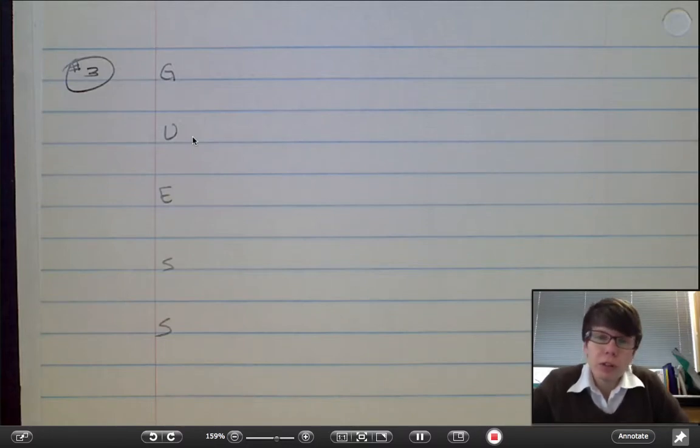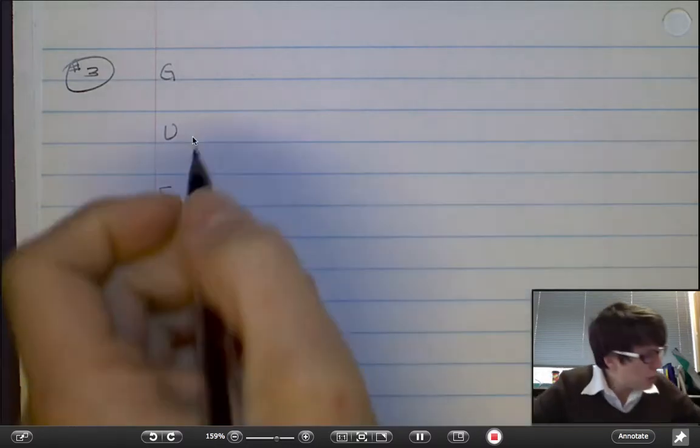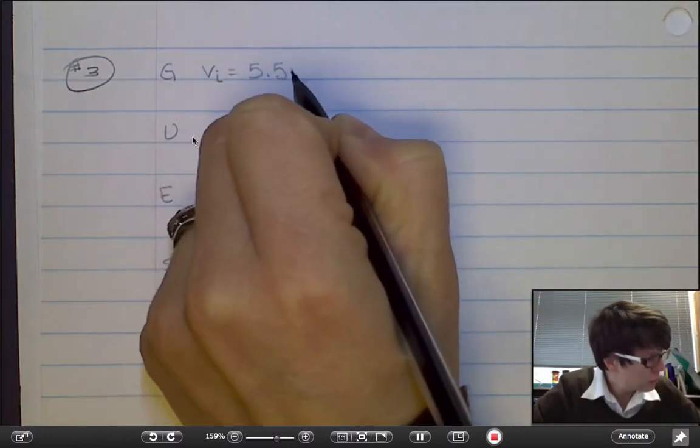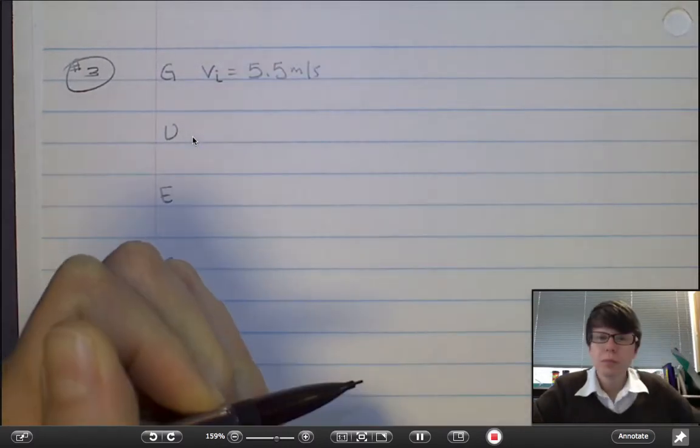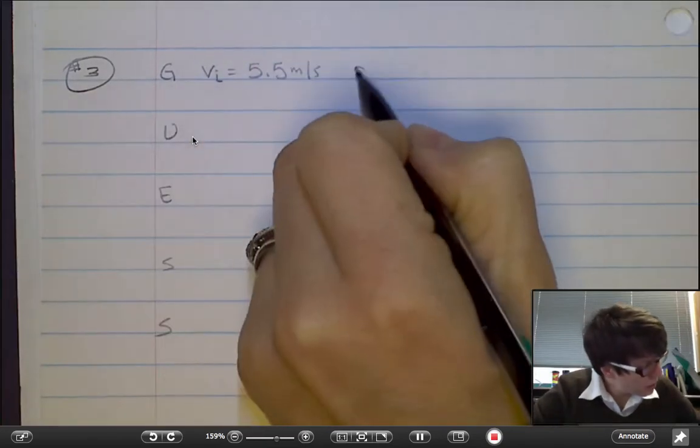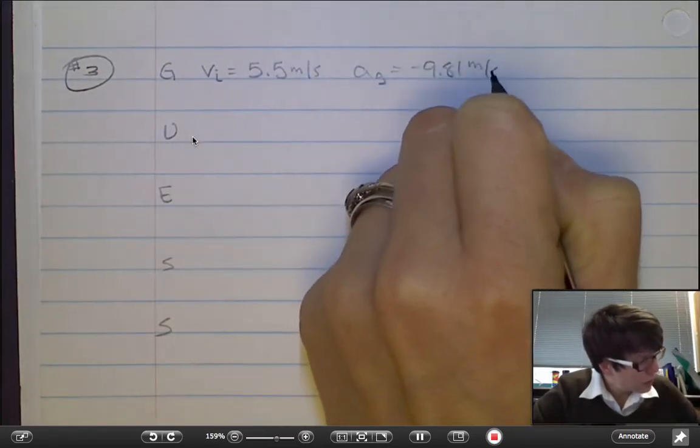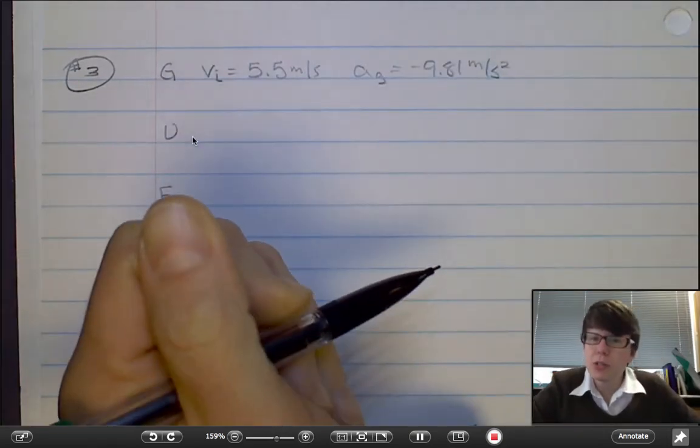You may assume free fall in Loki's case. An initial velocity is given. The acceleration due to gravity is a hidden given because this is a free fall problem.